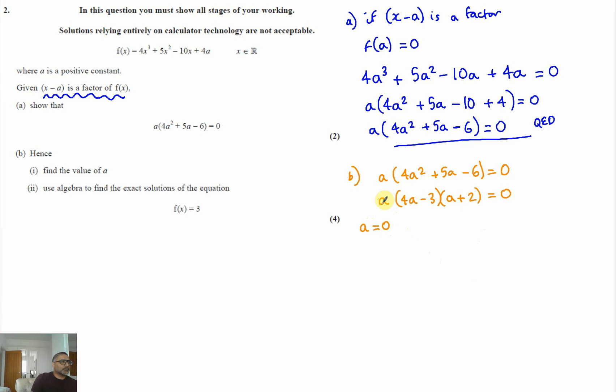So either a equals zero from there. Or 4a minus 3 equals zero, then a would be three quarters. Or a plus 2 is equal to zero, and a equals minus 2.